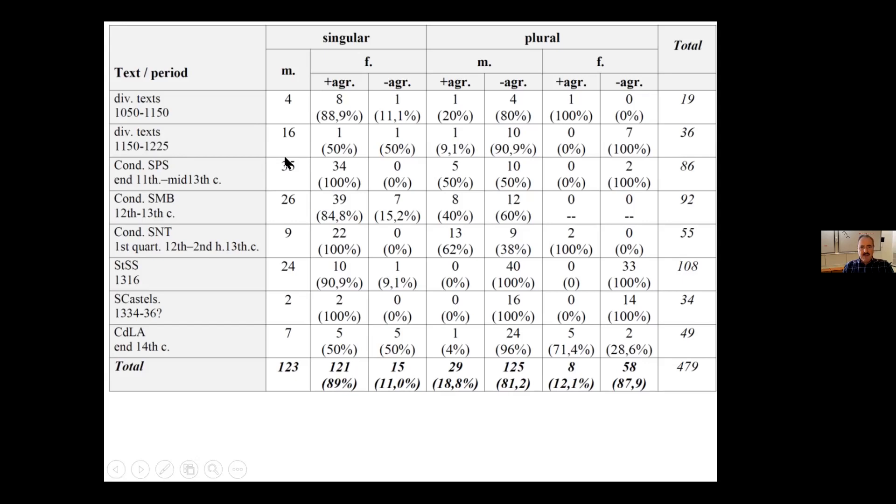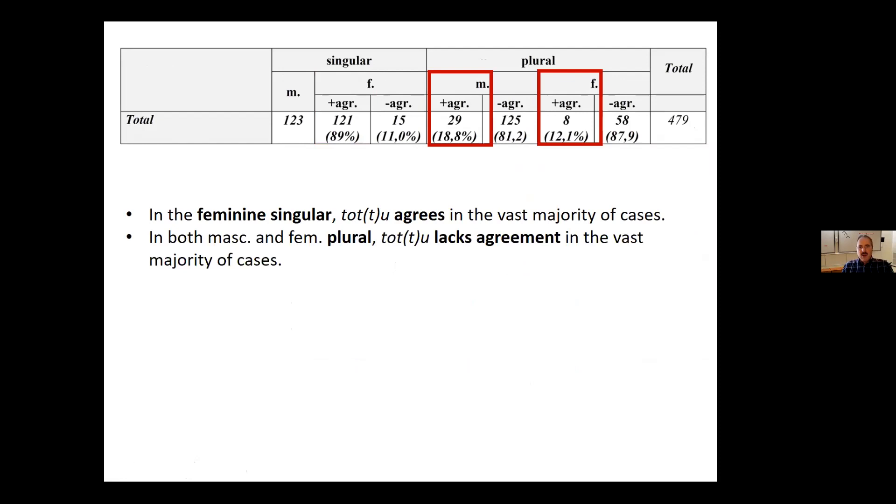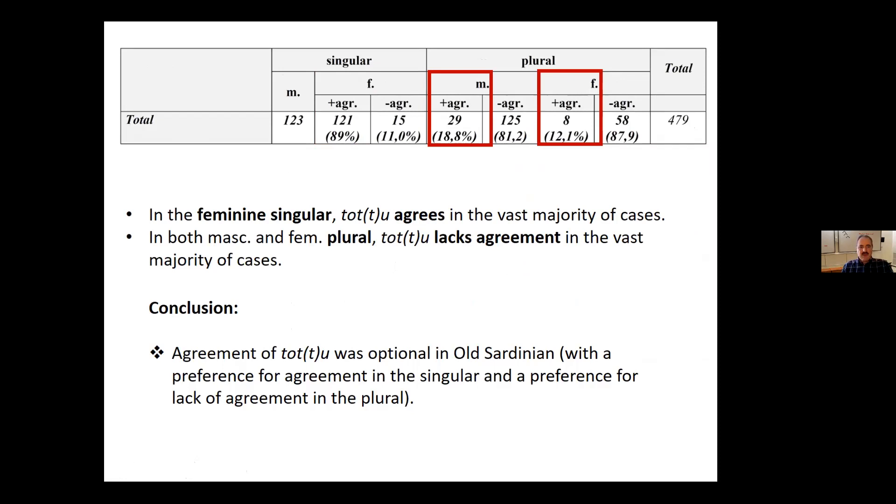Now, in the distribution over time, we can't really see much, and we can discuss this in the discussion, but I will just focus on the overall results of the whole Old Sardinian period. And there we see something interesting. So in the feminine singular, TOTTO agrees in the vast majority of cases, whereas in the plural, TOTTO lacks agreement in the vast majority of cases. This leads us to the first conclusion that agreement of TOTTO was optional in Old Sardinian, with a preference for agreement in the singular and a preference for lack of agreement in the plural.